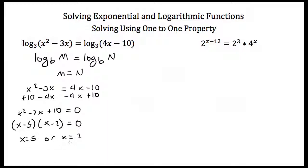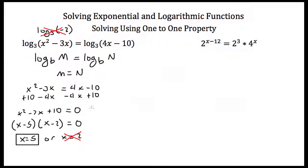Now if you ever get more than one value for x as a possible solution to a logarithmic problem, it's always best to go back and check your answers by plugging them back in, because you can only take the log of positive numbers — you cannot take the log of 0 or a negative number. If I plug in x equals 2 into x squared minus 3x, this gives the log base 3 of negative 2, and you cannot take the log of a negative number, which means x equals 2 is an extraneous solution. Our only real solution is x is equal to 5.